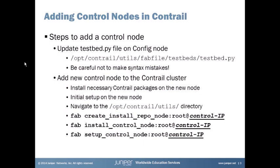To add a new control node to the cluster, first install the necessary control packages on the new node using the ISO or RPM packages. Using the ISO is recommended — it's the all-in-one package and requires much less work than using RPMs. Then perform the initial setup on the new node: set up the hostname, management IP address, and interface. This is critical — without it you won't be able to add it to the control cluster later.